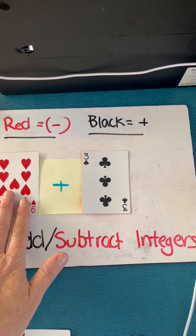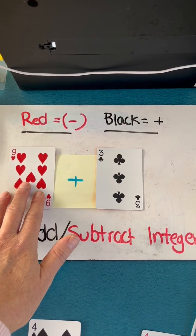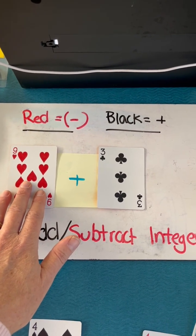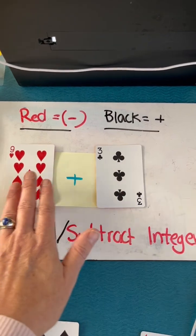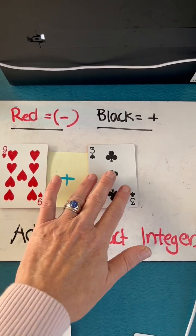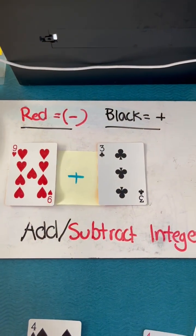So as you can see here, I took out the picture cards and I associated a value for each card. The red is negative, the black is positive, so negative 9 plus positive 3 is going to give me an answer of negative 6.